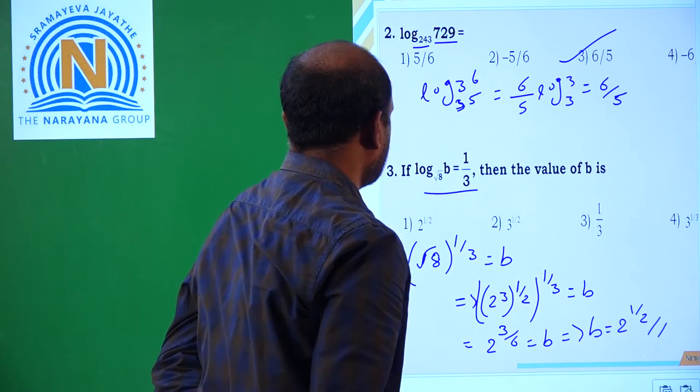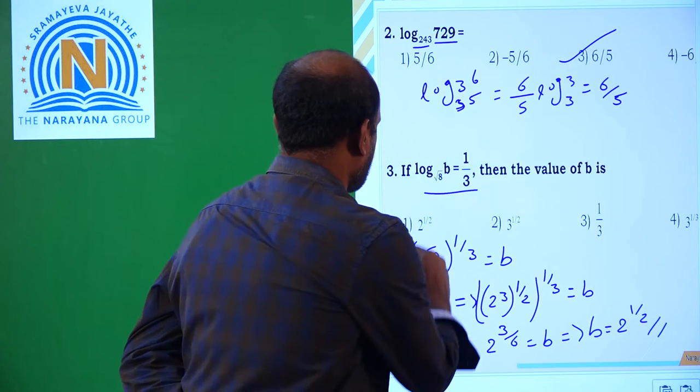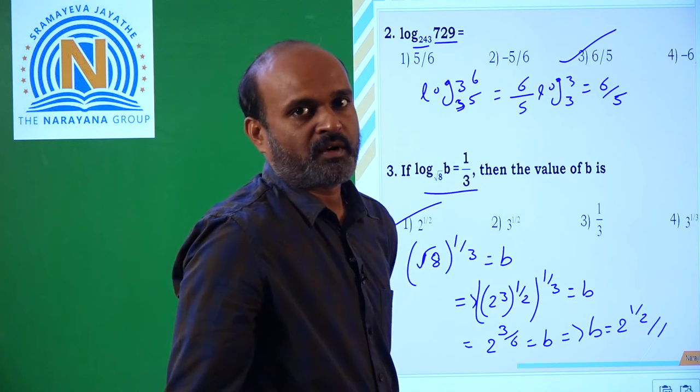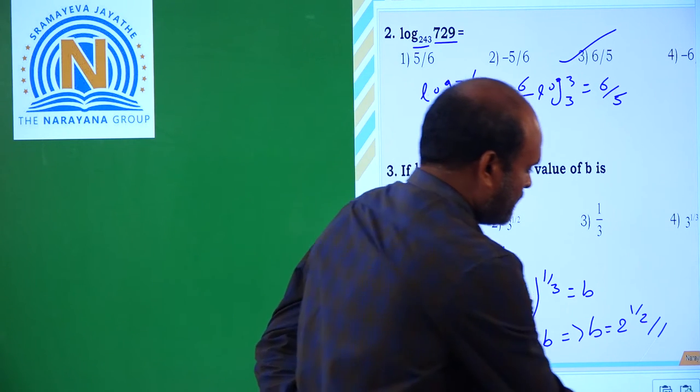So that implies B is equal to 2 power 1 by 2. Therefore option 1 is the correct answer.